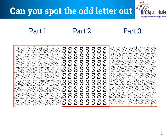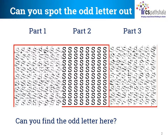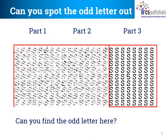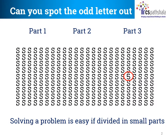Let's move on to part 2. Here is the second part — can you find the odd letter here? Nah, everything looks the same. Let's try part 3. This is part 3. Can you find the odd letter here? Hey, there it is! It's a 5. Five looks a lot like S, hence we couldn't find it easily. You see, we divided a big problem into smaller problems which were easy to solve. We divided the entire picture into 3 parts — you may divide it into more if you like.